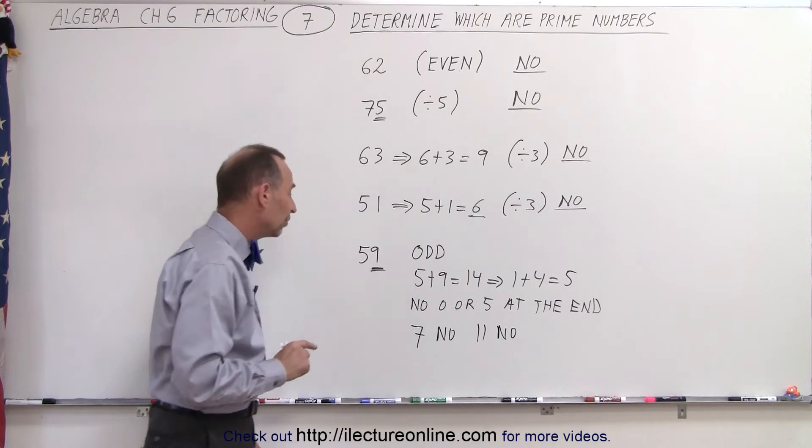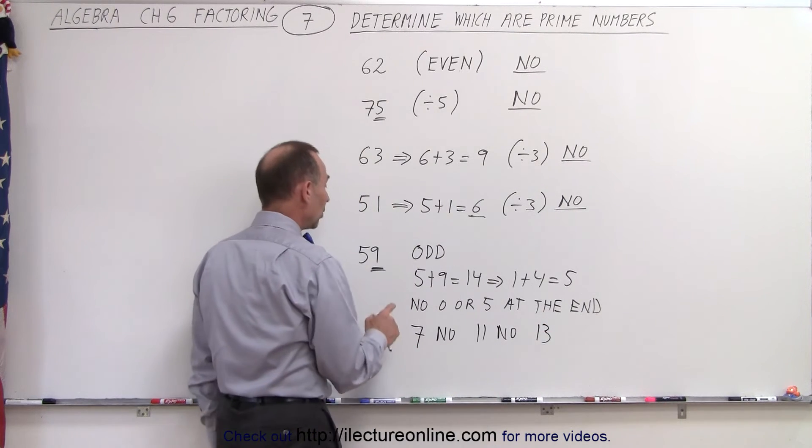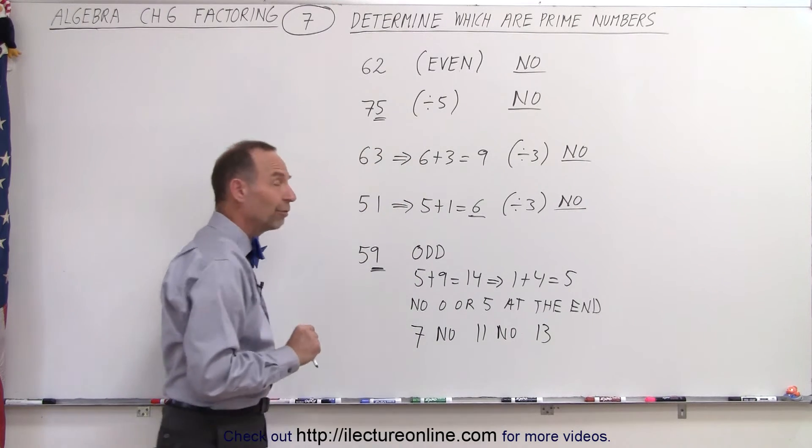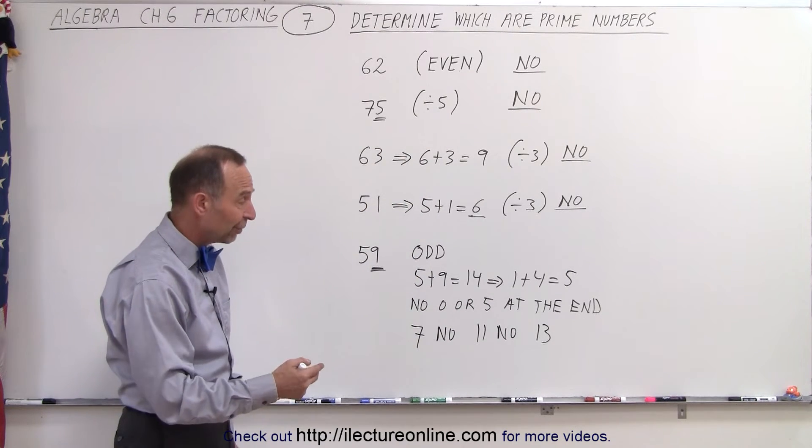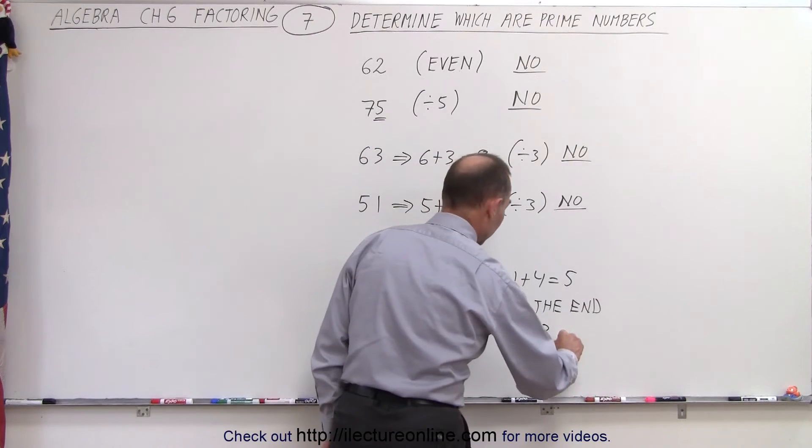The next prime number would be 13, but notice we would then have to multiply 13 times some small number to make it fit into 59, like 4 or 5. Well, 4 times 13 is 52, 5 times 13 is 65, so that doesn't work either.